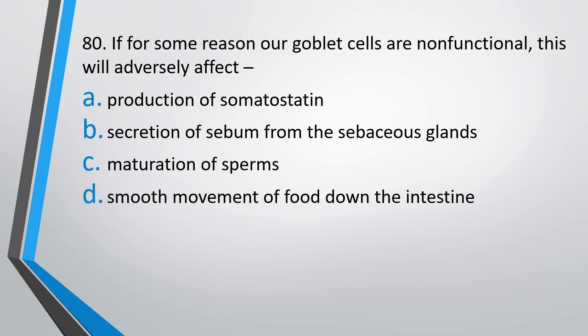Question number 80: If for some reason our goblet cells are non-functional, this will adversely affect — production of somatostatin, secretion of sebum from the sebaceous gland, maturation of sperm, or smooth movement of food down the intestine. The correct answer is option D. Goblet cells are the source of mucus. If they are non-functional, mucus will not be secreted and the smooth movement of food down the intestine will be affected.